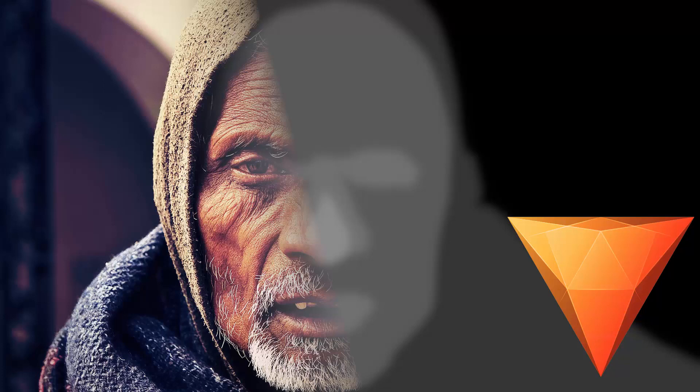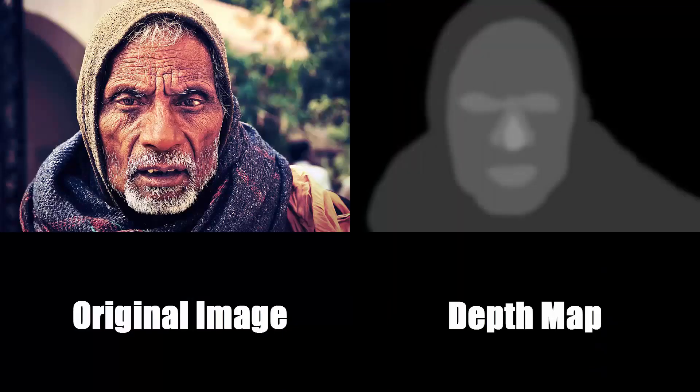First we need to create the depth map for our particular image. This is the depth map for this image — it's not a perfect depth map, but the concept is that portions closest to the camera are in light gray color and portions farther away are darker. For example, the background of the image is dark and the tip of the nose is light gray.